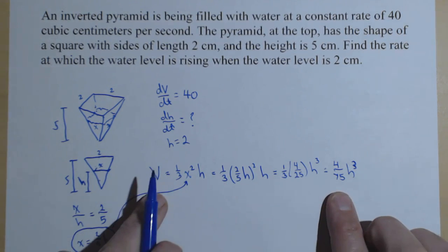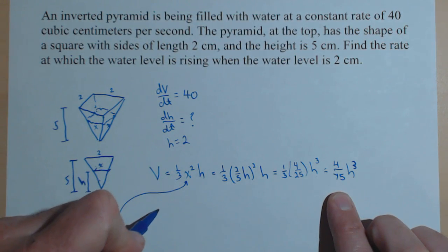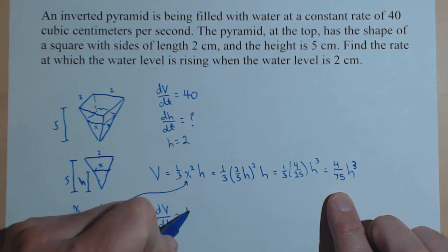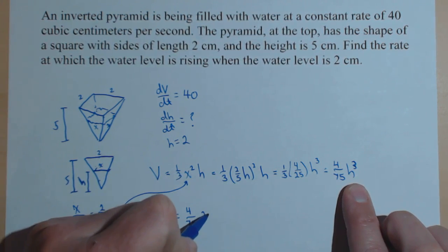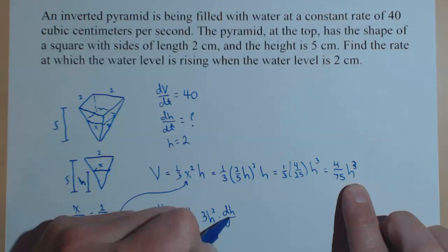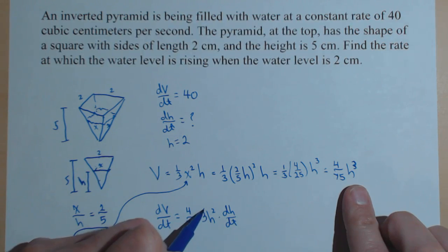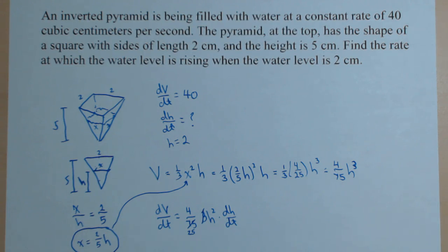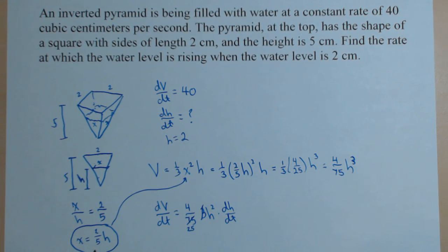Which now makes it very easy to find our dv dt. So dv dt equals 4 over 75. Now we take the derivative. So 3 h squared times dh dt. We can do a little bit of simplifying.